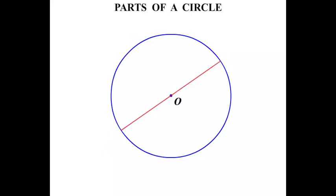Now a line that goes through the center and goes from one end of the circle to the other is known as a diameter. A line from the center to the outside is known as a radius.